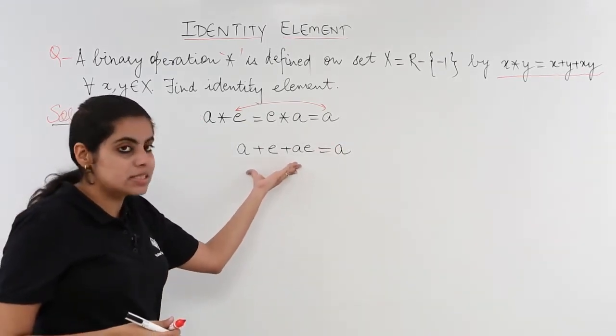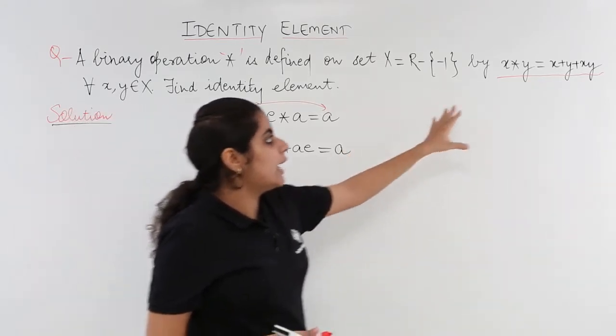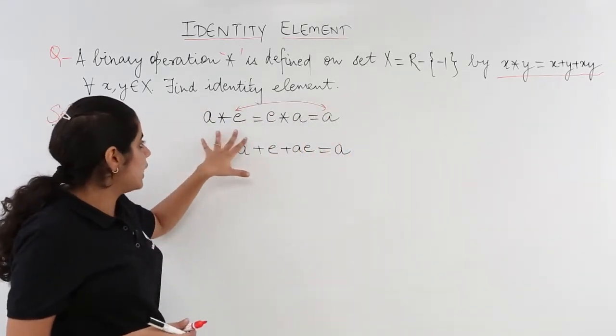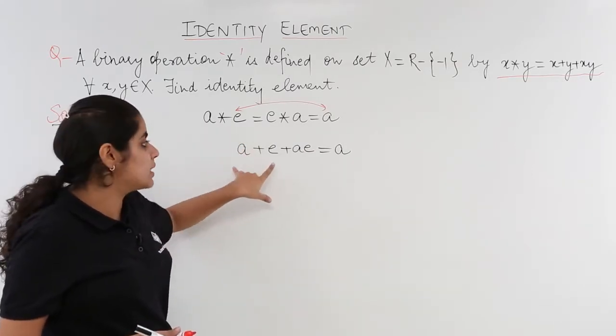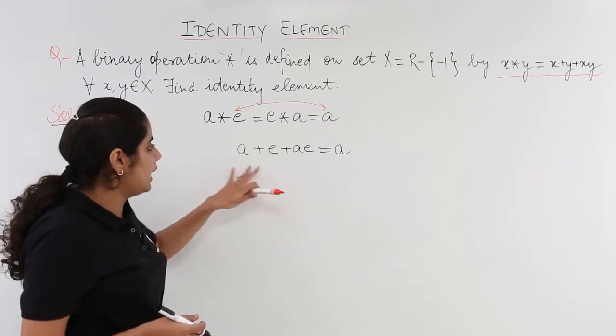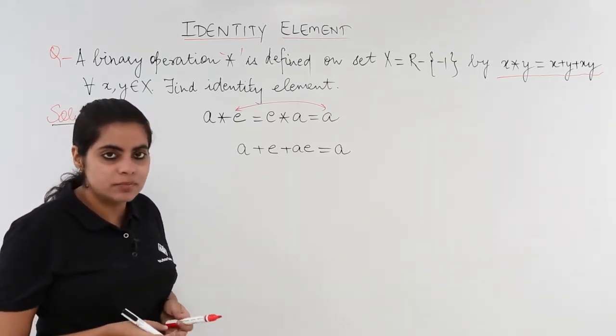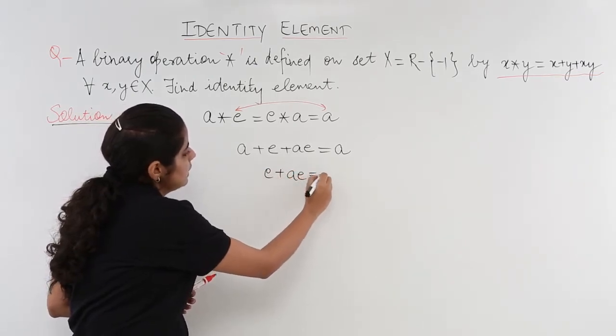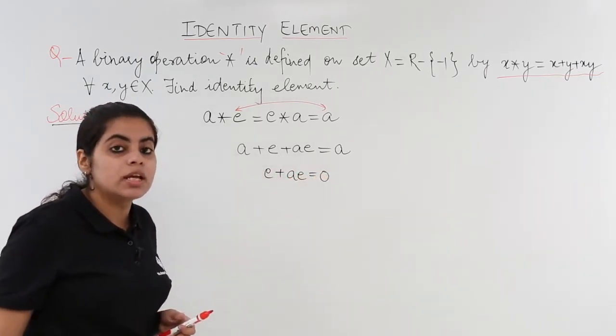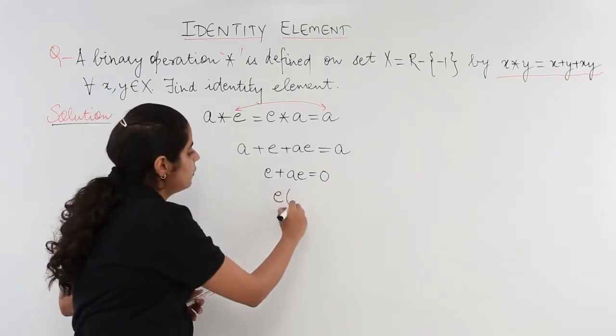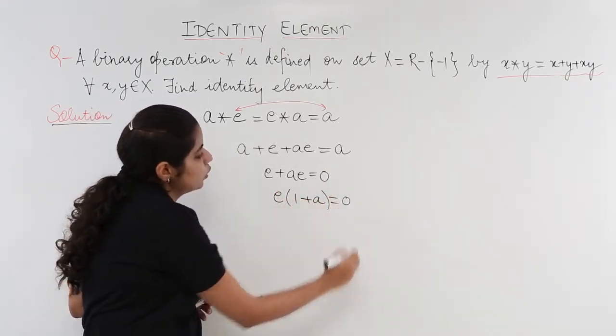How has this come? Let me repeat this again. I know that x star y equals x plus y plus xy. So a star e equals a plus e plus ae. That means sum plus product. Now a and a do get cancelled. So I am left with e plus ae equals 0. Now one more thing, e becomes common. You are left in the bracket with 1 plus a equals 0.